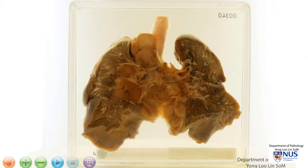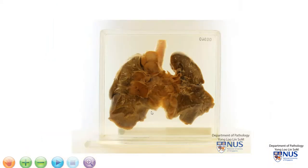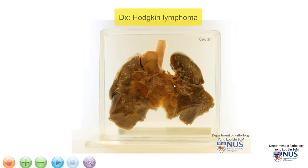The main differential diagnosis when we see these enlarged matted lymph nodes would be infectious conditions, for example TB. TB generally wouldn't give this kind of fish-flesh appearance. The other differential, of course, is malignancy. In the mediastinum, malignancies in children would include germ cell tumors and also certain types of lymphomas, particularly Hodgkin lymphoma. And this is an example of Hodgkin lymphoma.